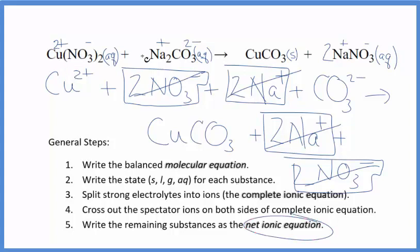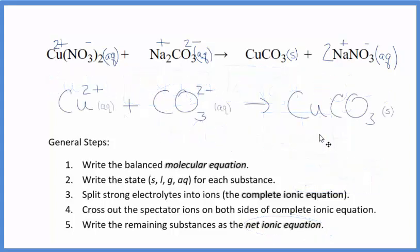I'll clean this up and write the states in, and we'll have our net ionic equation. So this is the balanced net ionic equation for Cu(NO3)2 plus Na2CO3. You'll note that charge is conserved. We have two plus and two minus, they give us a net charge of zero. Over here in the products we have a neutral compound, net charge of zero. So charge is balanced and if you count the atoms up, they're balanced as well.